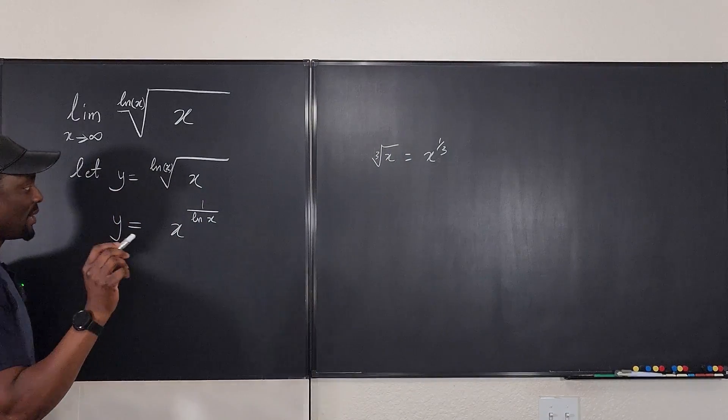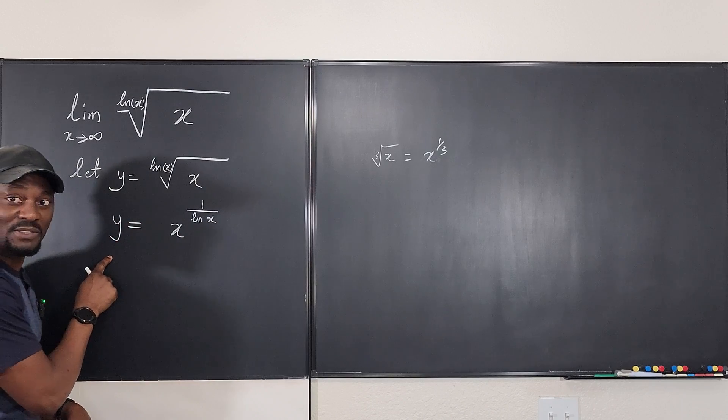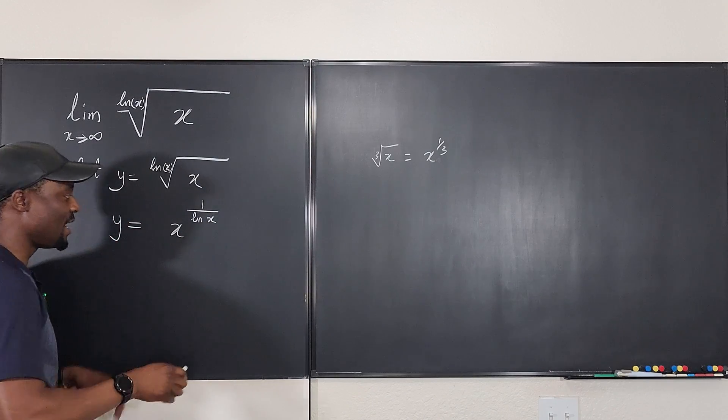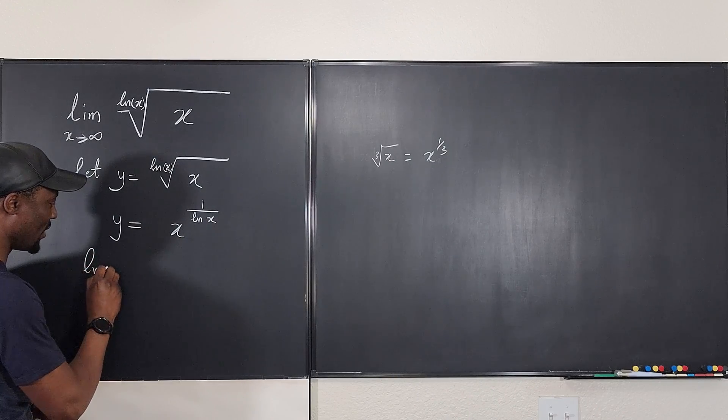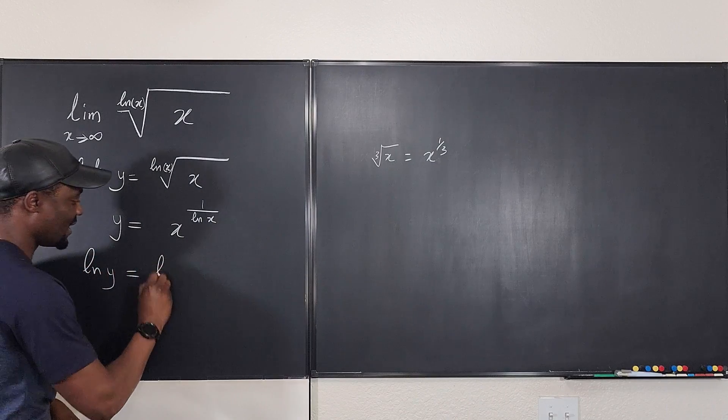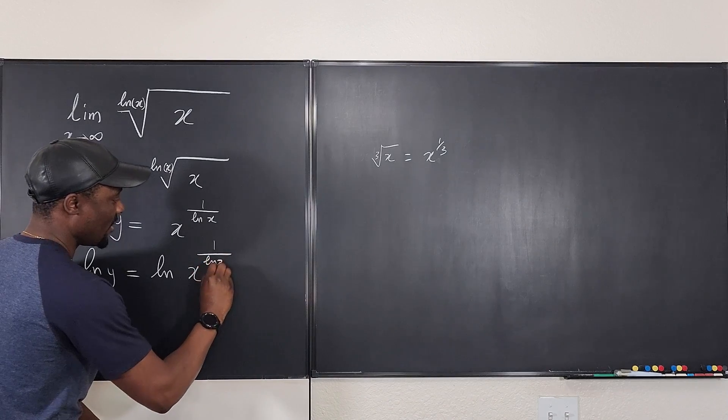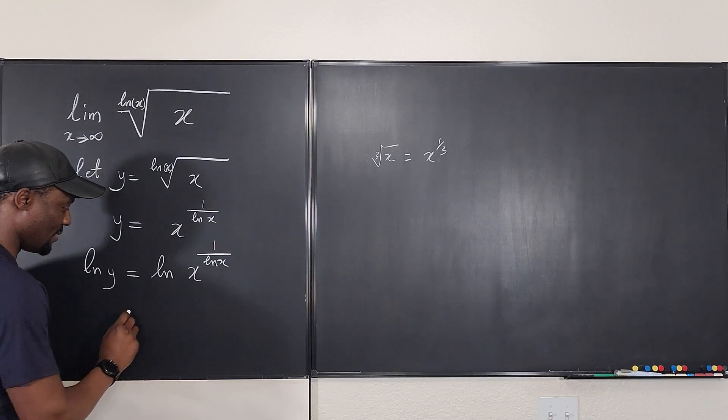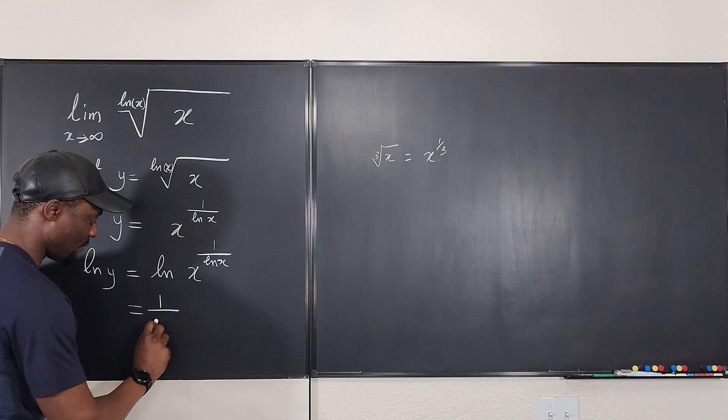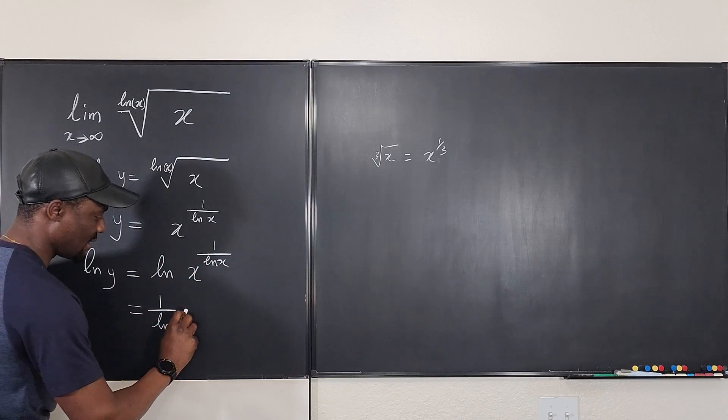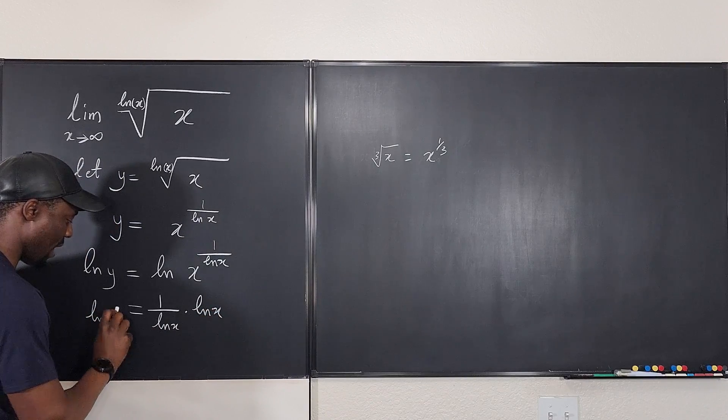Remember, our mission is to find the limit of y since y is this. So we're gonna take the limit of y as x goes to infinity. But before we take the limit, let's try and rewrite again. If I take the natural log of y and I take the natural log of both sides this way, 1 over ln(x), what do you observe? You observe that I can bring this all the way down here, so I have 1 over ln(x) times ln(x). That's still ln(y).